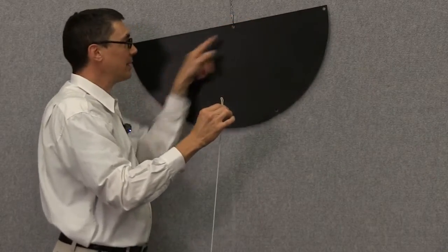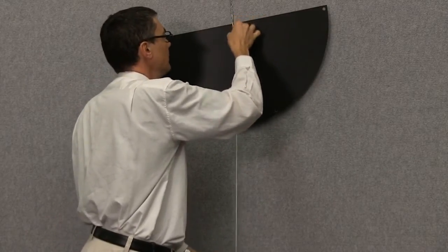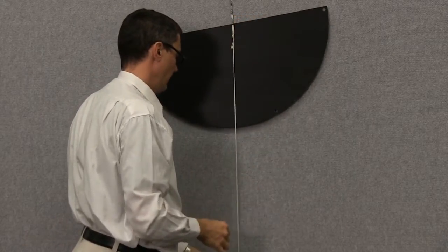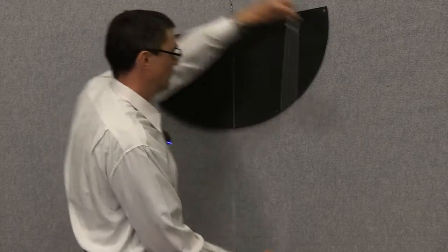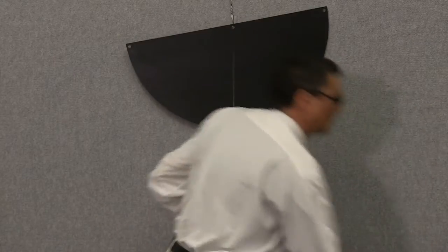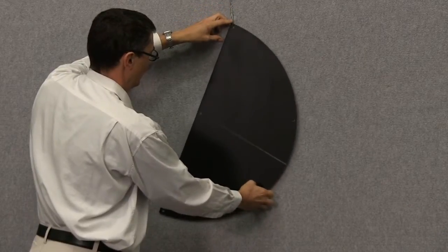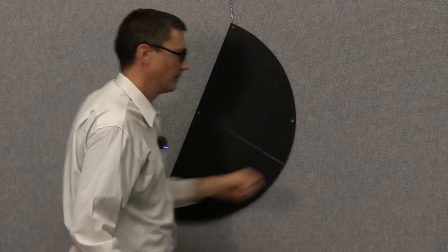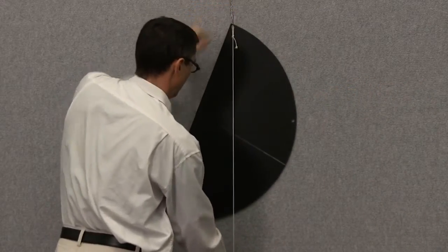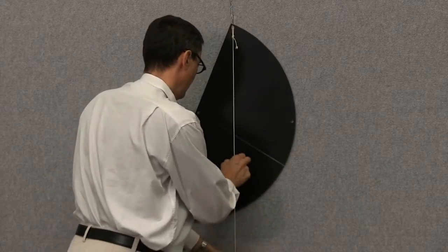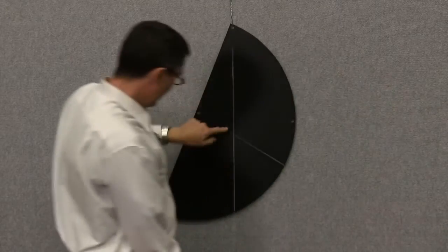Now in case you're wondering why that's not horizontal, it's because that hole is not drilled right in the center of this diameter. Let's see. All right, looks like it's there.